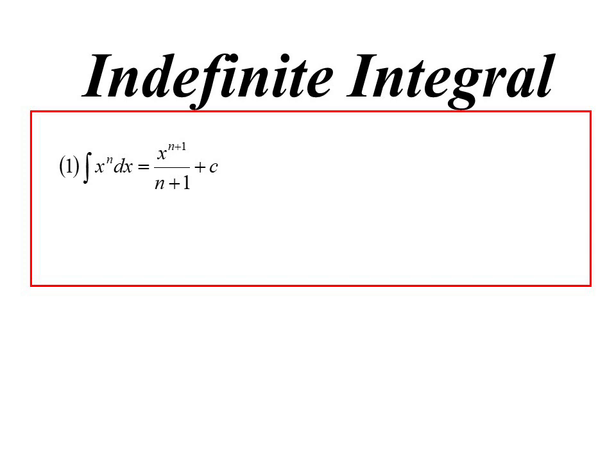The first one was called the definite integral because we had limits that we were substituting in, so we definitely get an answer. We come up with a number. Here we have no numbers to substitute in, so we're not sure. We're indefinite.